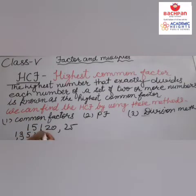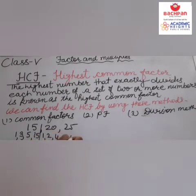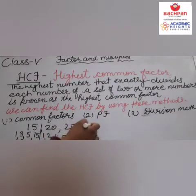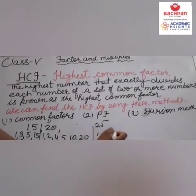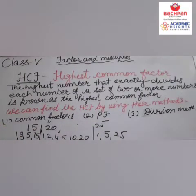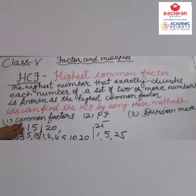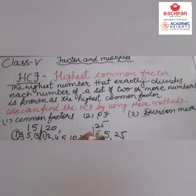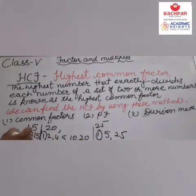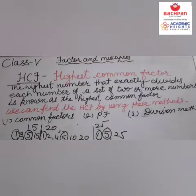Now the factors of 20 are: 1, 2, 4, 5, 10, and 20. And the factors of 25 are: 1, 5, and 25. So the common factors are 1 and 5.